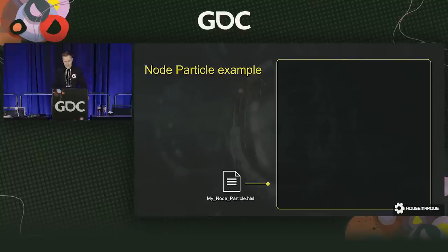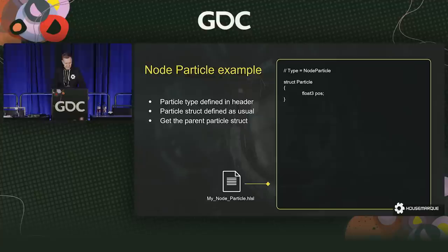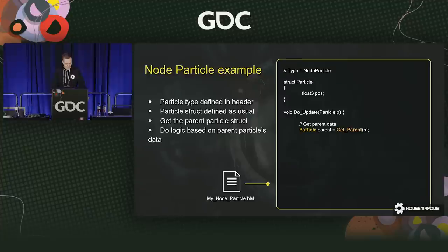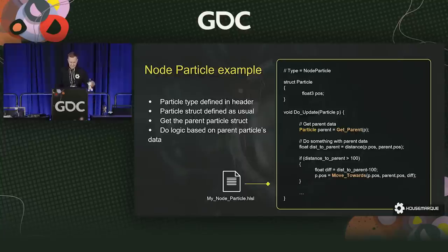Let's have a quick look at the node particle code and see how we can utilize the parent-child relationship. Our goal is to create one of the tentacles that we had on many of our enemies in Returnal. First, we need to tell the system that the particle is a node particle — that's done in the header so the system knows to include relevant code. We do the particle definition as usual, and then in the update code the engine provides a function for getting the parent particle. After that, you're free to do whatever logic you want based on the parent particle data — in this case, we check if the parent is more than 100 units away and move the child particle closer to the parent if true.